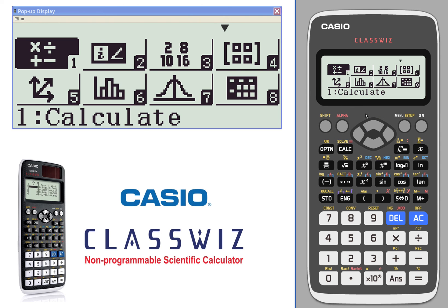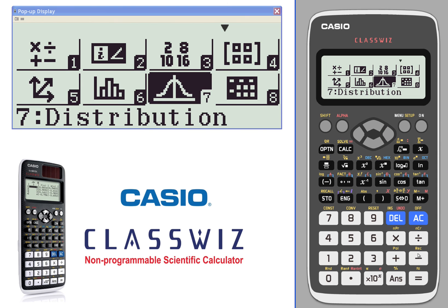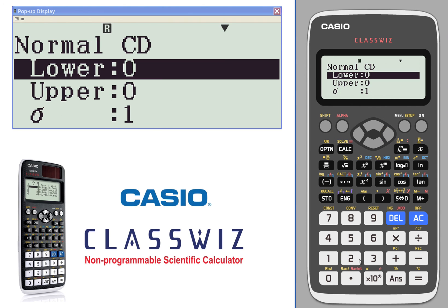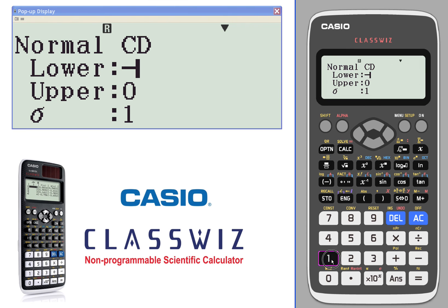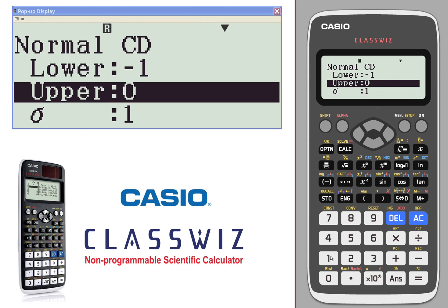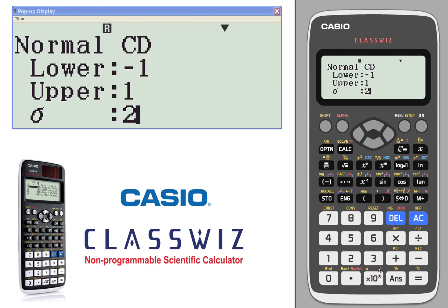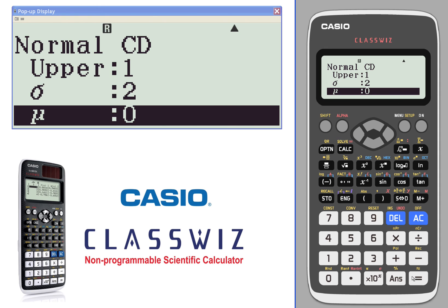Again, you have the ability to do QR codes at different places. If we go into distributions and we want to look at a normal cumulative distribution with a lower limit of negative 1 and upper limit of 1, standard deviation of 2, and we'll say a mean of 0.